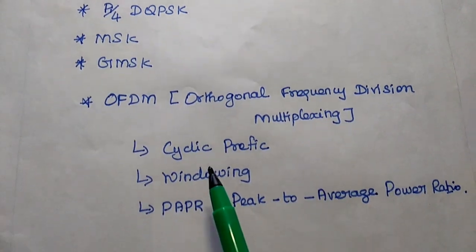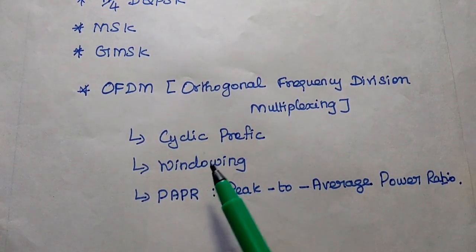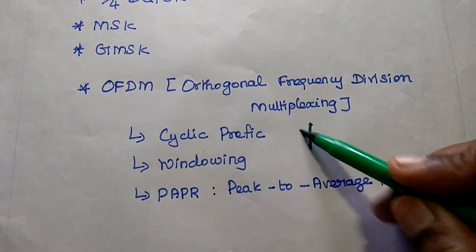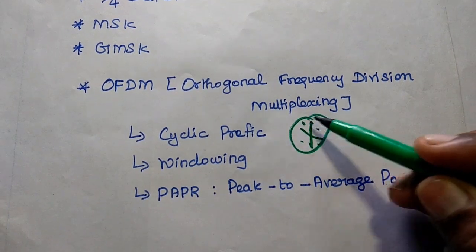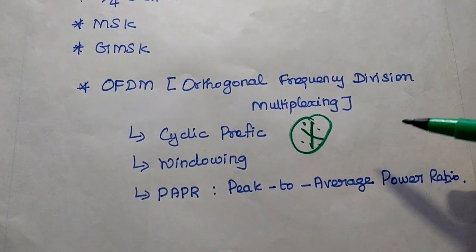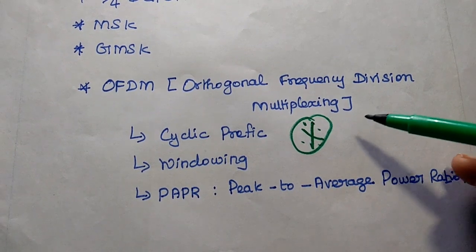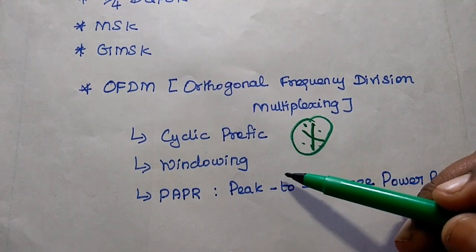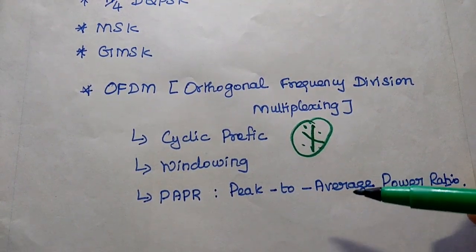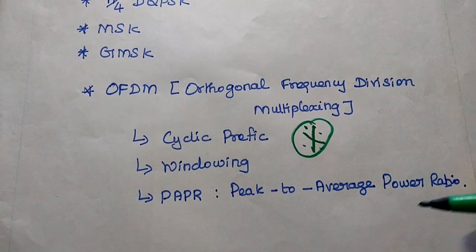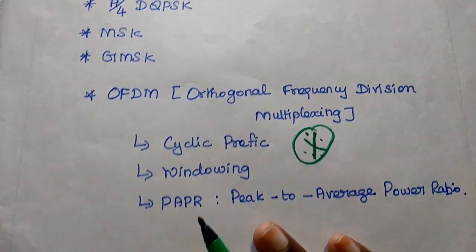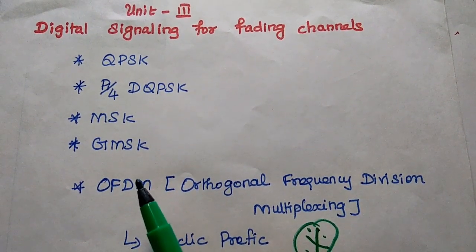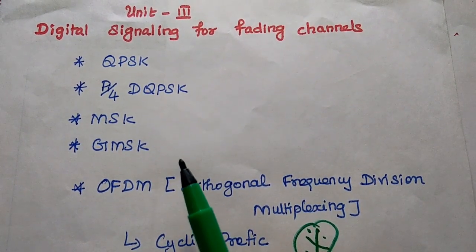The second half of Unit 3 is all about OFDM, which stands for Orthogonal Frequency Division Multiplexing. This method is very important, so concentrate more on this topic. There will definitely be one question from OFDM. Under this topic, we have cyclic prefix, windowing, and PAPR (Peak to Average Power Ratio). MSK and GMSK from the first half are also important.